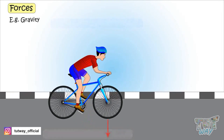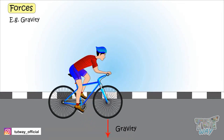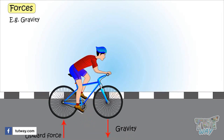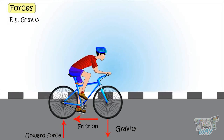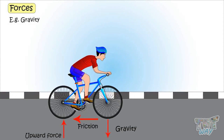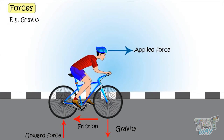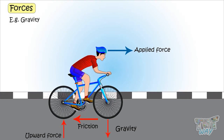Gravity is pulling down. The ground is pushing upward. Friction is opposing the movement. Applied force, or muscular force, is moving it forward.